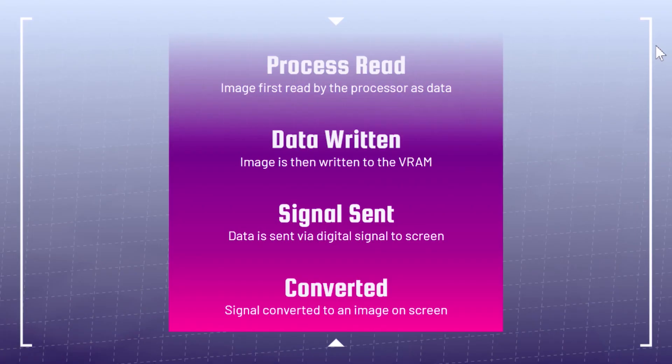VRAM is the buffer between the processor of the computer and what is displayed on the display. First, the image is read by the processor as data — so you're editing and the image on your screen has been read as data. From there, the data is written to the VRAM. Then the signal is sent to the display via digital signal to the screen. Finally, the signal is converted to an image on your screen.